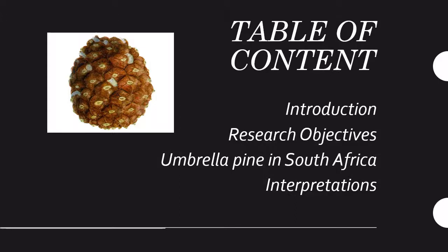This is a table of contents. I'll first introduce the project, the modeling of the niche, and also introduce my species, which is the Umbrella Pine, the research objectives, and I will also talk about Umbrella Pine and the species in South Africa. I will also interpret the maps from G-WIFT and DIVA and what they mean for the country and on a global scale.